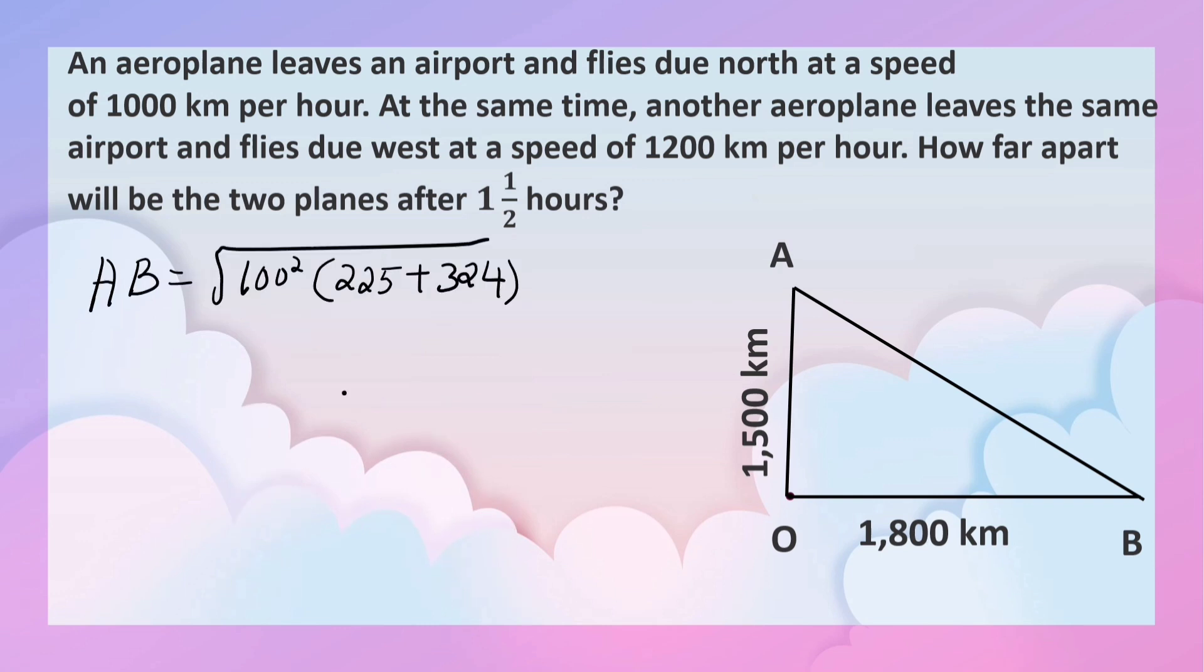So AB is equal to 100 square into 225 plus 324. Now take the square root of 100 square - what is it? 100. If you add these two, you will get 549. How can you take the square root of it? This is not a perfect square. So now let us prime factorize it.